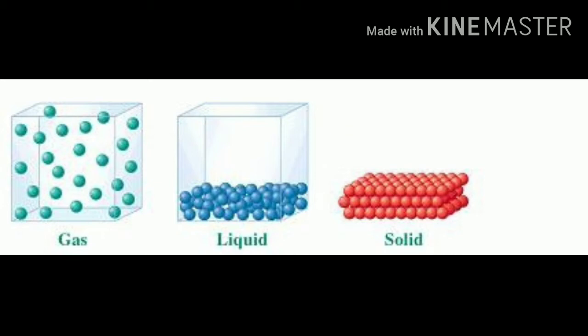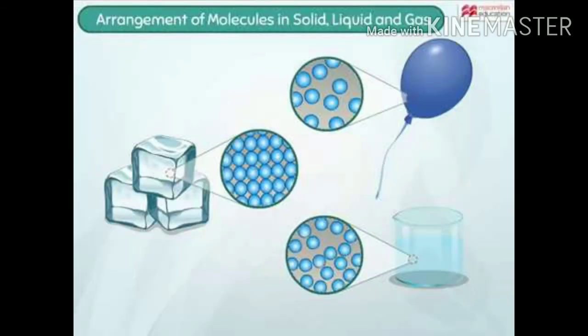Paani, chatanein, patthar, jitni bhi hamaari dhatuein hain yaani ki metal hain, hamare plants hain, ye sab kya hain — ye hain matter. Kyunki in mein mass bhi hai aur ye jagein bhi ghirte hain. Depending on the arrangement of these molecules, matter can exist in three main states: solid, liquid aur gas.